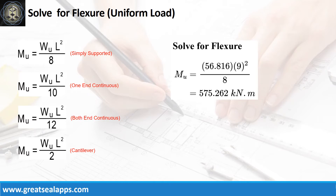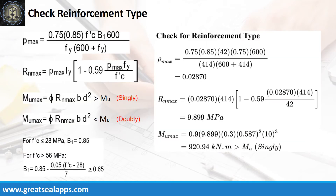Given a factored load of 56.816 kN/m and L equals 9 meters, the maximum moment is 575.262 kN·m. The raw max from the given design criteria is 0.0287, then RN max is 9.899 MPa. Finally, MU max is 920.94 kN·m, which is greater than 575.262 kN·m, confirming a singly reinforced beam design.